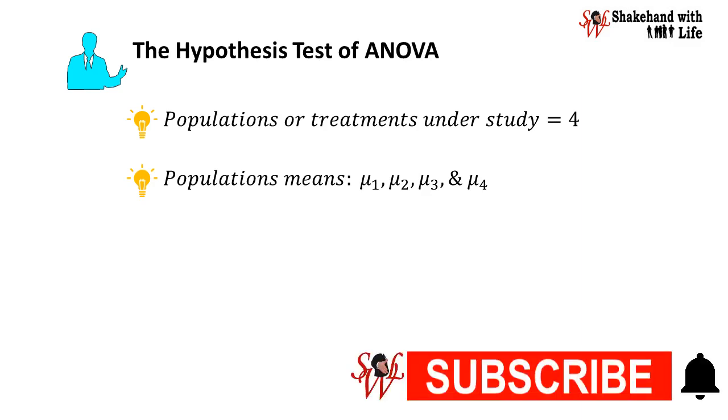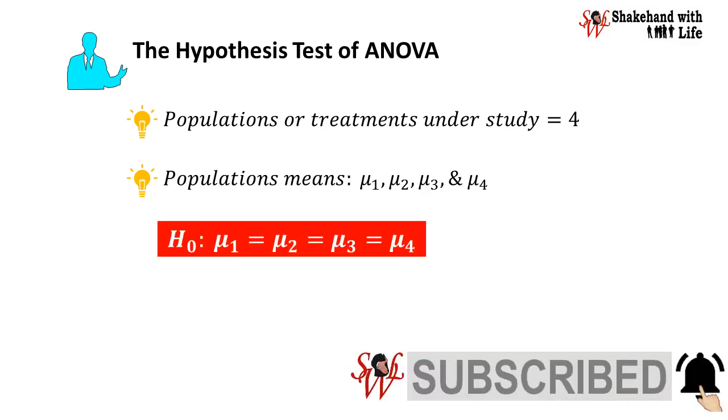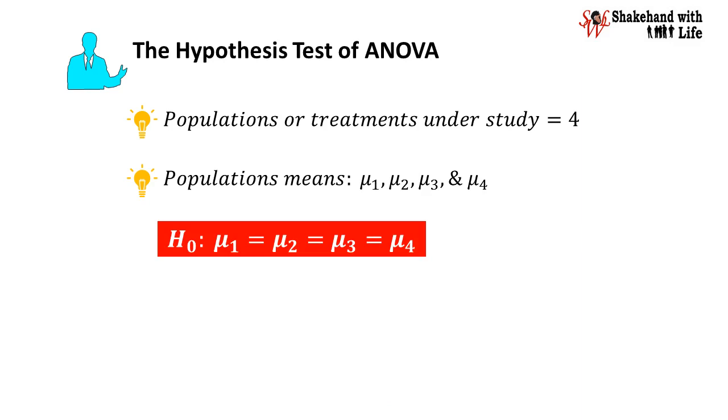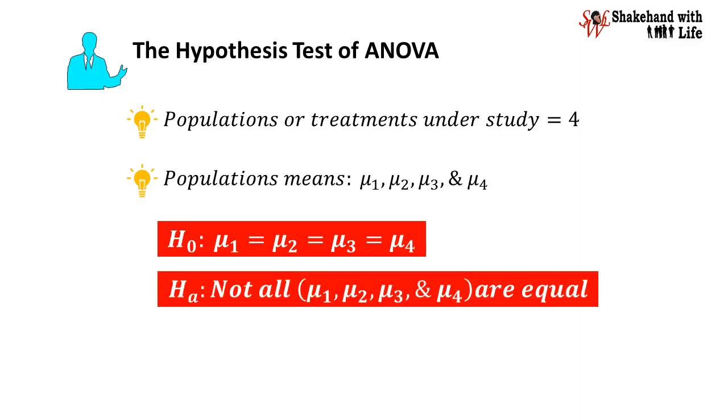Now null hypothesis H0 under ANOVA states mu1 equal to mu2 equal to mu3 equal to mu4. And alternative hypothesis HA states not all four population means mu1, mu2, mu3, and mu4 are equal.